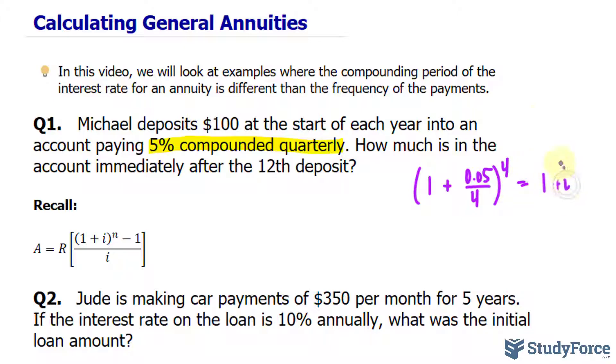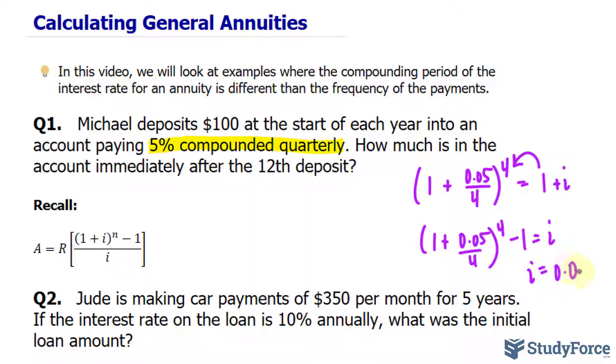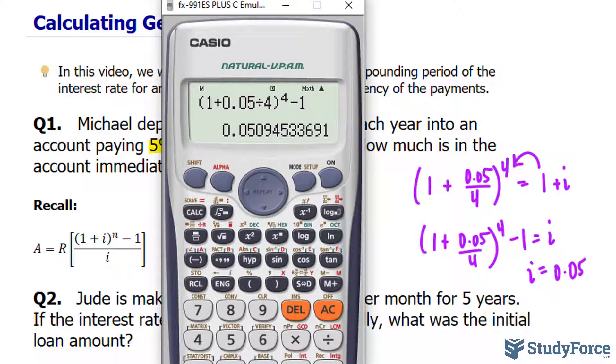All we have to do is solve for i. I have 1 plus 0.05 divided by 4, raised to the power of 4 minus 1 equals our new interest rate. So we open up our parentheses: 1 plus 0.05 divided by 4, raise that to an exponent of 4 minus 1. Our interest rate is, you want to include as many decimal places as possible, at least up to 6. So we have i equals 0.050945.